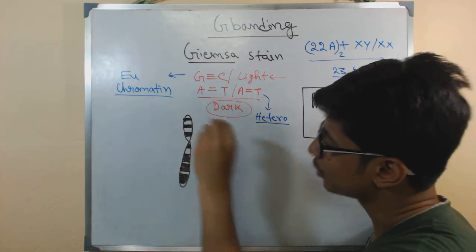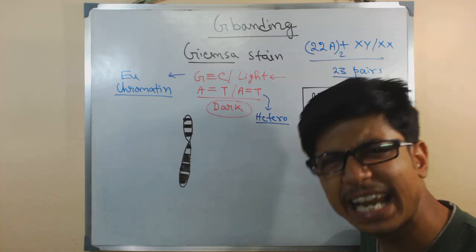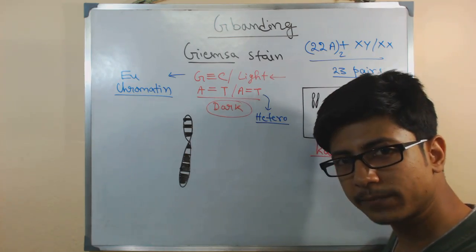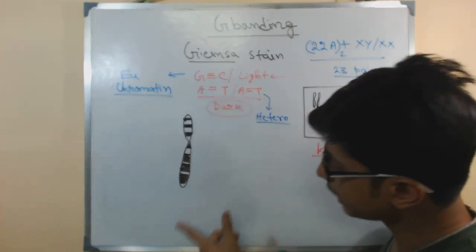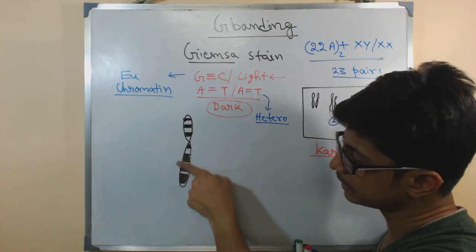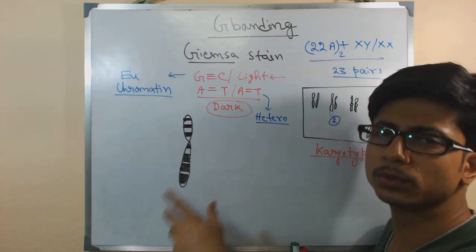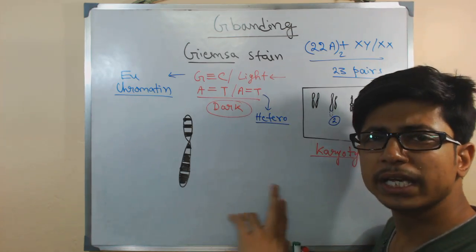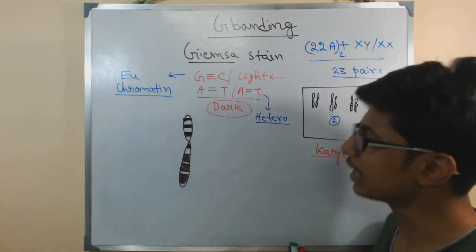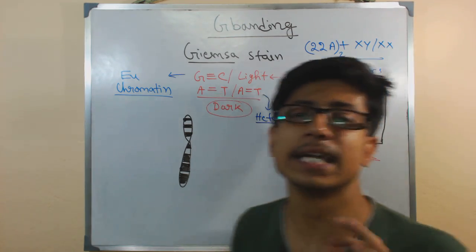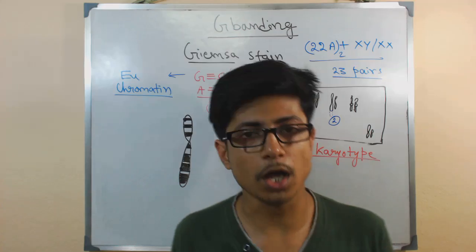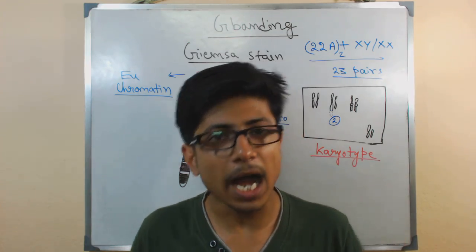So darker region means heterochromatin, lighter region means euchromatin or the coding site. So you can see here the coding site in a chromosome is very less compared to the non-coding site. So that is another thing you can understand by this Giemsa stain. Now you can say if there is any problem with any segment here or there—any substitution, any deletion, any inversion can't be determined—but substitution, deletion or addition we can actually get the idea. So that is the importance of this G-banding.